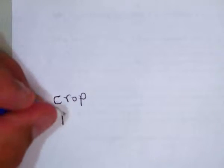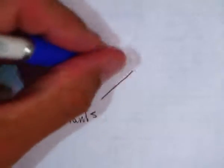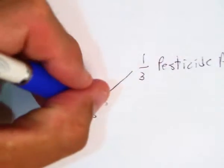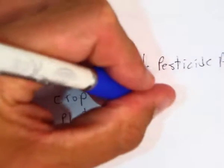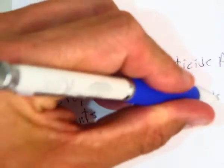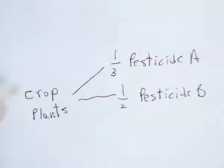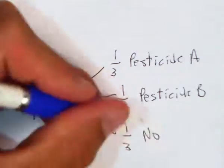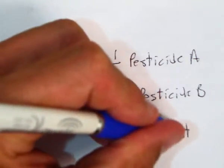What we're going to do is we've got our crop plants. One third of them are going to get pesticide A. One third are going to get pesticide B. And then a third are going to get no pesticide. That's our control group.